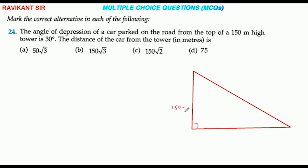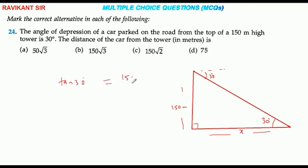Given a 150 meter high tower and angle of depression of 30 degrees, the car is at the bottom of the tower. Using tan(30°) which equals 1 by root 3, we set that equal to 150 meters to find the distance of the car from the base of the tower.